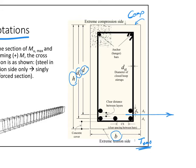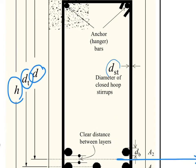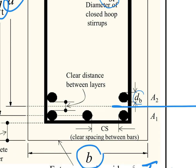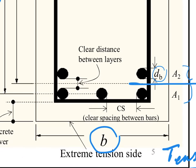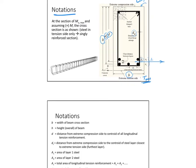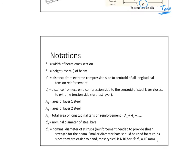The width of the section is b. The stirrup diameter is dst. The bar diameter is db. The total reinforcement area of all layers combined is As. The clear spacing between bars is cs, and we will see how important cs is.